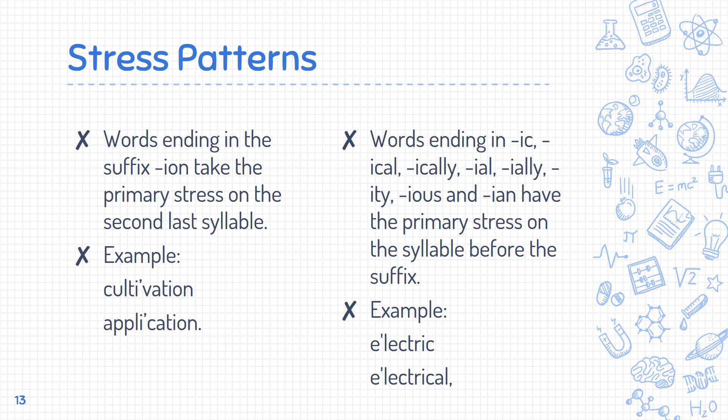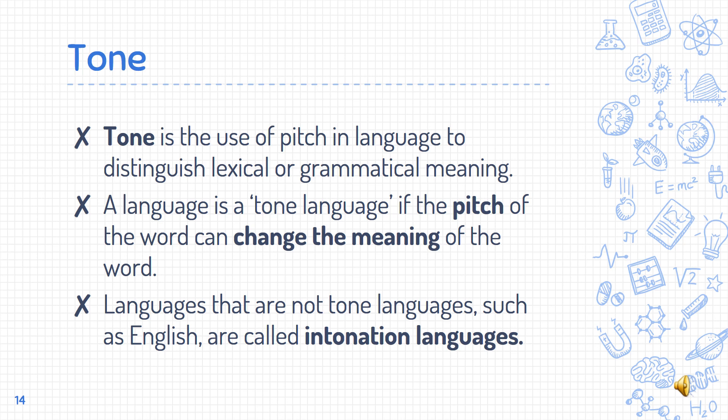Words ending in the suffix -ion take the primary stress on the second-to-last syllable, for example 'cultivation,' 'application.' Words ending in -ic, -ical, -ity, -ious, and -ion have the primary stress on the syllable before the suffix, for example 'electric,' 'electrical.'